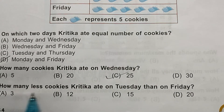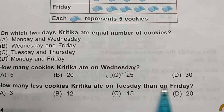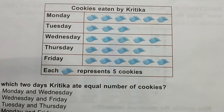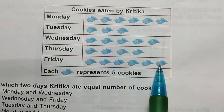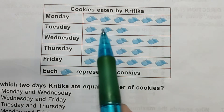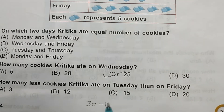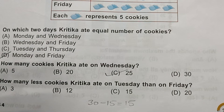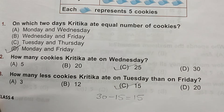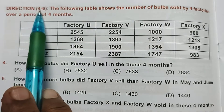Question 3: How many less cookies did Kritika eat on Tuesday than on Friday? Friday she has 6 pictures — that is 30 cookies. Tuesday she has 3 pictures — that is 15 cookies. 30 minus 15 equals 15. So the answer is option C.